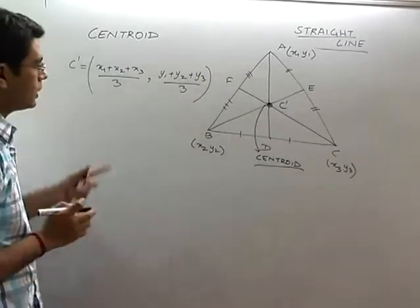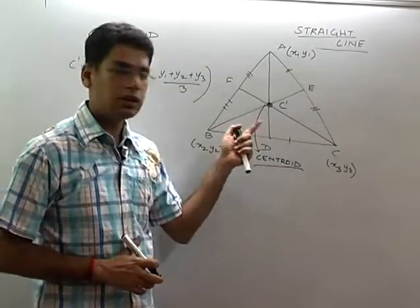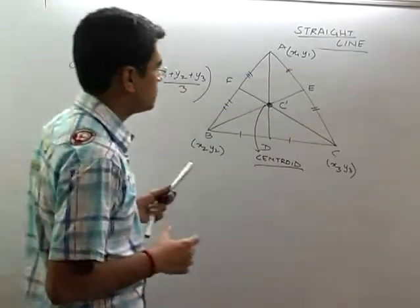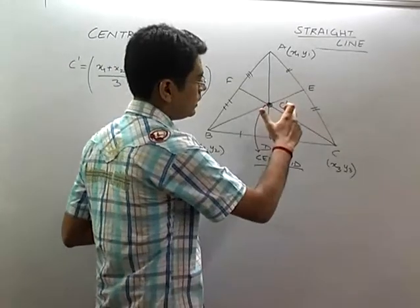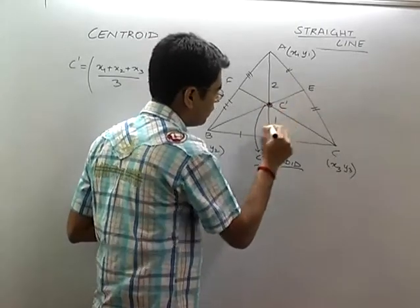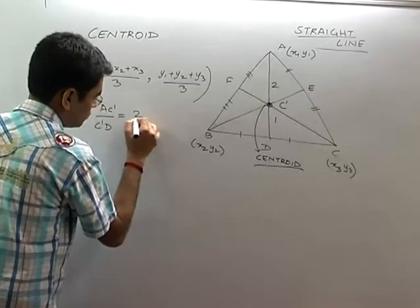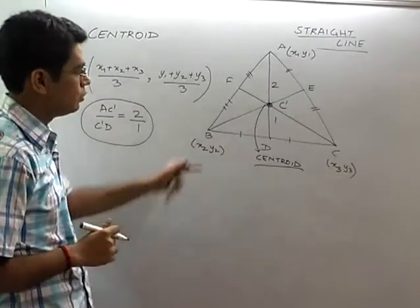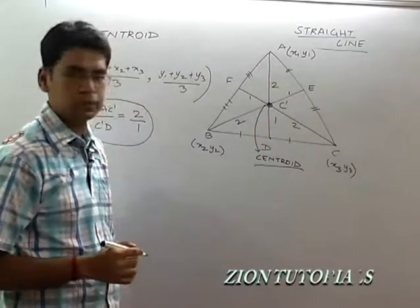It is the point where the medians of the triangle meet. This is an interesting property that you must have studied in class 10th as well. The centroid divides each median in the ratio 2:1. So AC-dash upon C-dash D is equal to 2:1. Similarly, the other medians are also divided in the ratio 2:1.